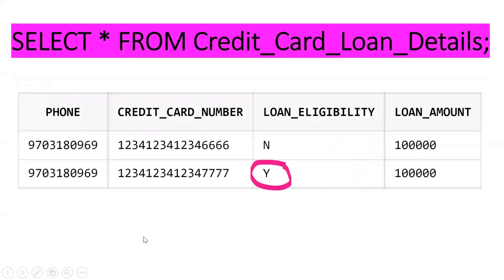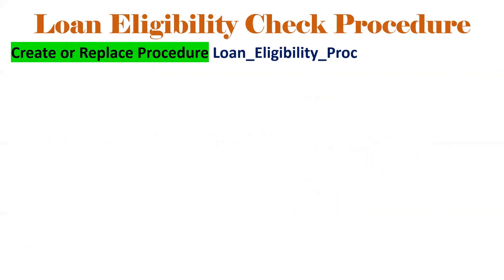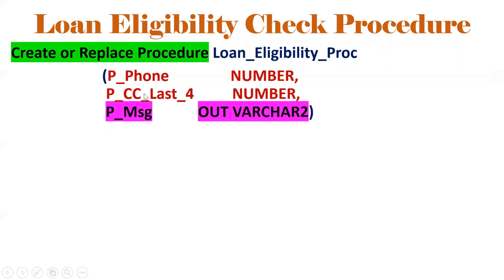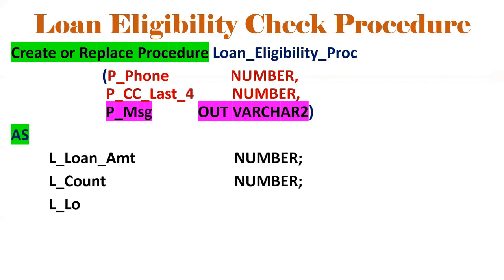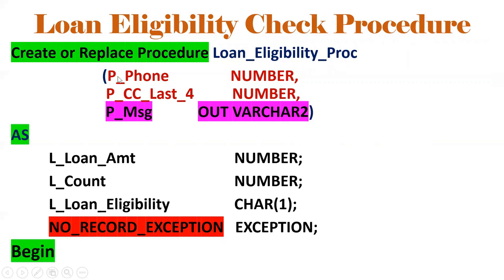On selecting from credit_card_loan_details, we can see that one record has last four digits all sevens and loan eligibility 'Y'. Now we write the procedure. CREATE OR REPLACE PROCEDURE loan_eligibility_proc with two input parameters: p_phone (registered mobile number) and p_last_four (last four digits of credit card). The output is p_message. Local variables declared are l_loan_amount, l_count, and a user-defined exception no_record_exception. The p_ prefix denotes parameters and l_ denotes local variables.